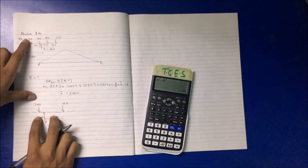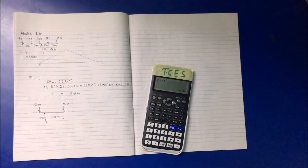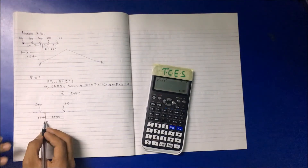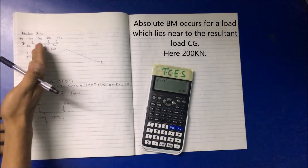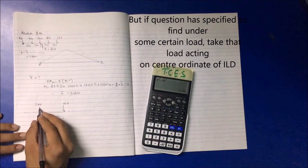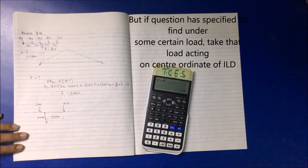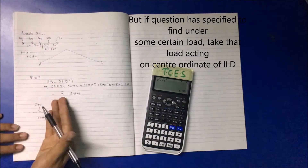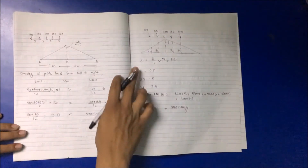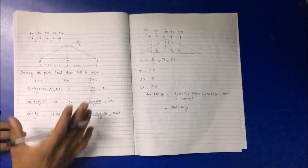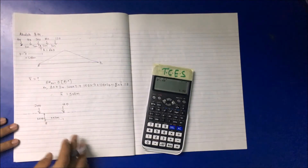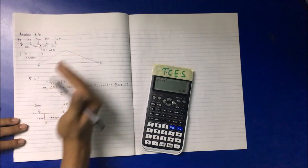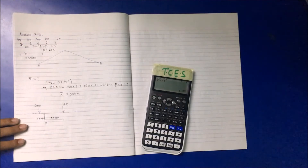Among these two loads, one will provide maximum bending moment. The load nearest to the resultant force will cause the maximum absolute bending moment. Therefore, the 200 kilonewton load is responsible for the maximum bending moment. You can verify this through the logical comparison of left-hand side and right-hand side.